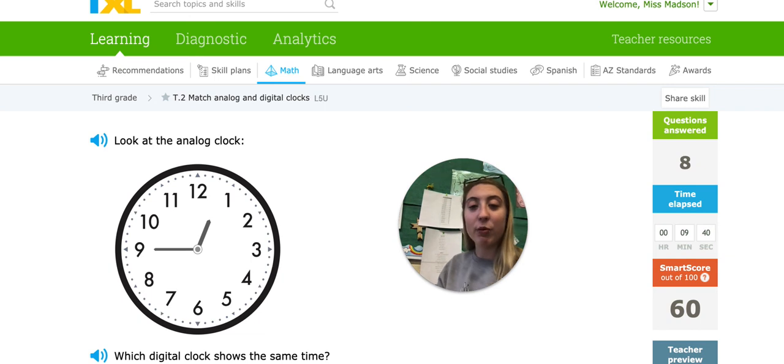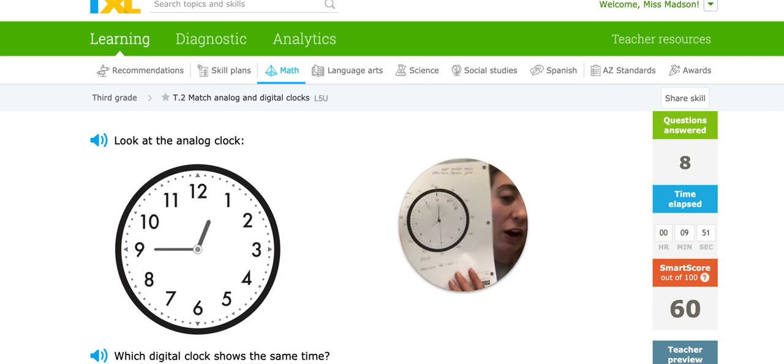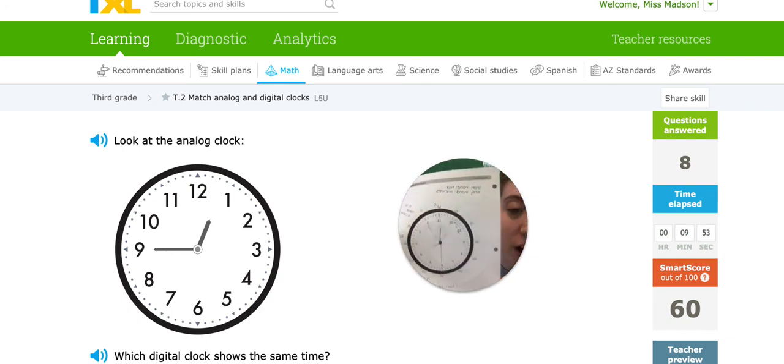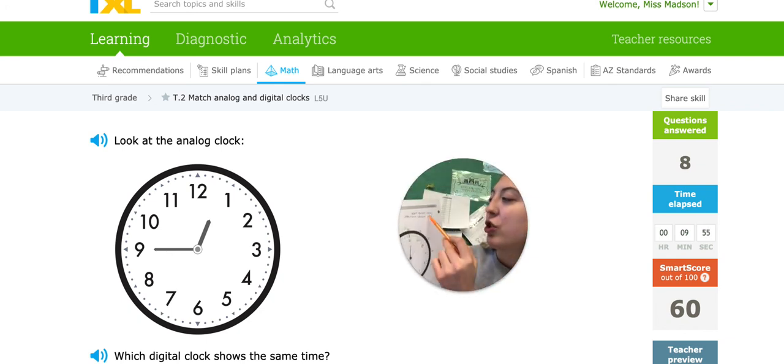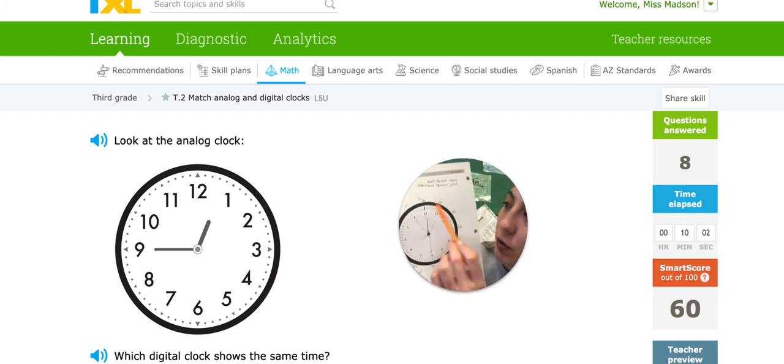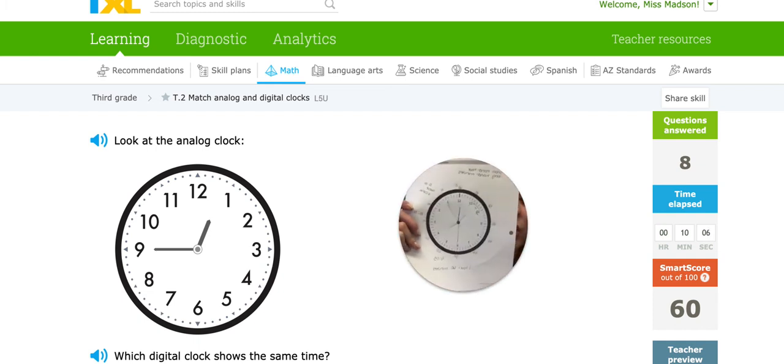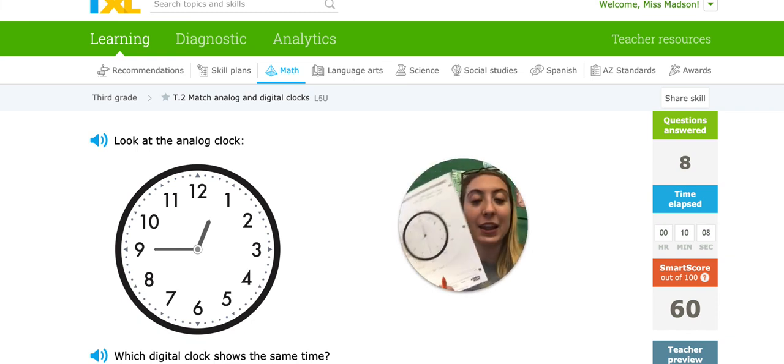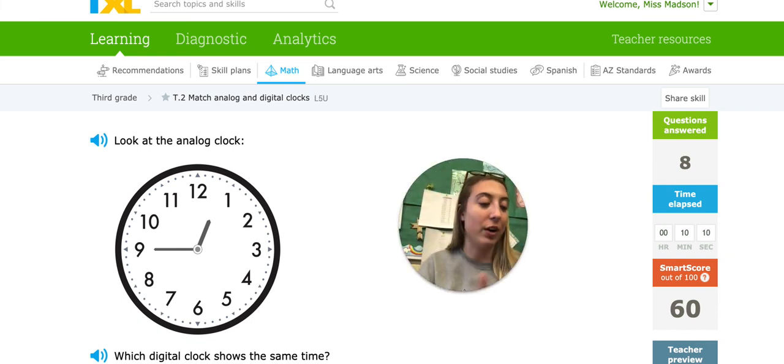When we wrote out our clock and we skip counted by 5s, use that and see if that helps you. So remember, we took out our clock from yesterday. We wrote short hand equals hour, long hand equals minutes. And if you write out the 5, 10, 15, 20, 25, 30, as you're doing your homework, you can look back at this and it will help to know where you're at.